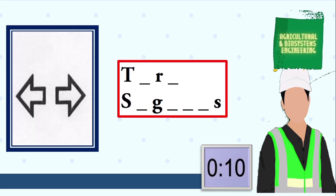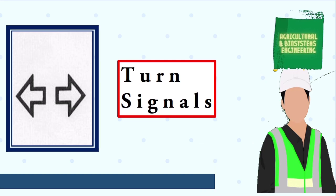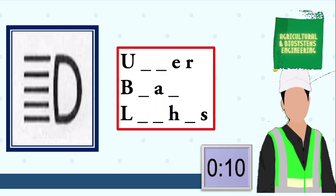Next symbol, your 10 seconds starts now. The answer is turn signals. Next symbol, your 10 seconds starts now. The answer is upper beam lights. Next symbol, your 10 seconds starts now.